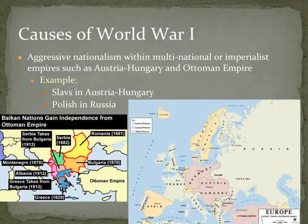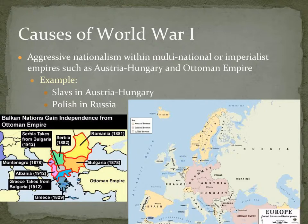Another cause is aggressive nationalism, especially within multinational or imperialist empires. Nationalism is pride in one's country or wanting to have a nation for one's own group of people. In large multi-ethnic empires like Austria-Hungary, there were a lot of different ethnic minorities that did not have their own nation. Examples would be the Slavs in Austria-Hungary — people from Eastern Europe who wanted their own nation, not to be under Austria's German-speaking government.